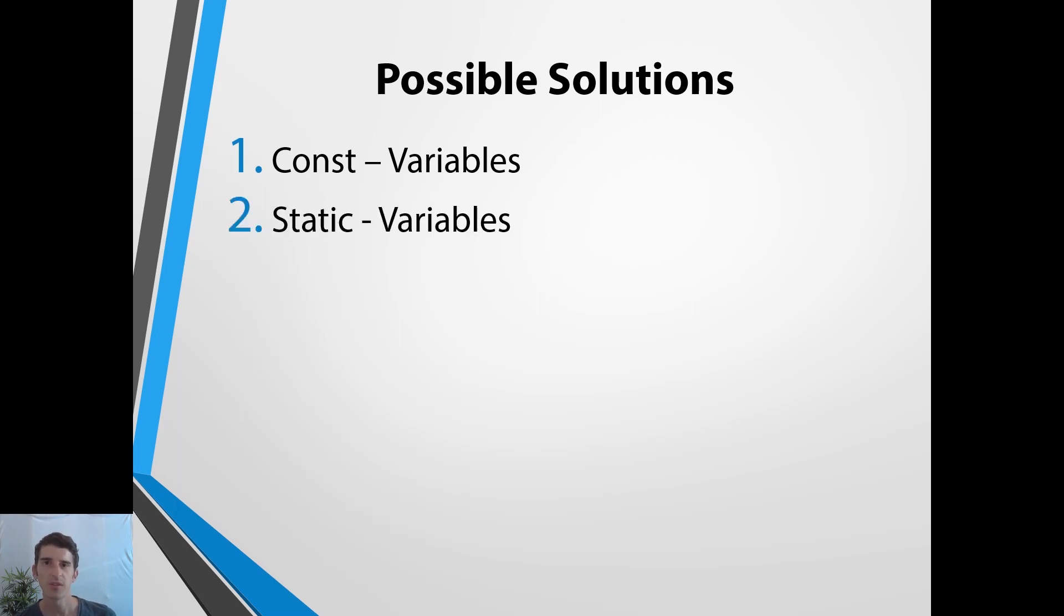First off, we could use constant variables in order to decrease the amount of memory we're gonna need. The second option we have are static variables. They do something quite similar but are a little bit more flexible. And the third option we have is the flyweight design pattern, and this is what we're gonna inspect a little closer right now.